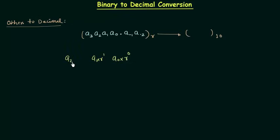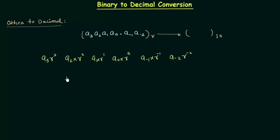In the same way we will multiply a2 by r raised to power 2, a3 by r raised to power 3. For the fractional part we will do the same thing — multiply a-1 by r raised to power minus 1 and a-2 by r raised to power minus 2. Now we will add all the results together and this will give us the decimal equivalent of the number.